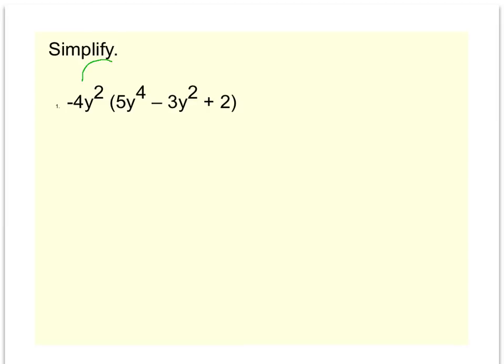So what I'm going to have to do is use my distributive property and multiply it by every term in the polynomial. And please remember, when multiplying terms like this, you're going to multiply the coefficients, which are the numbers in front of your variable, and you're going to add the exponents.